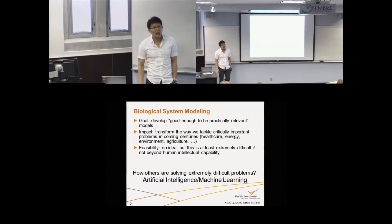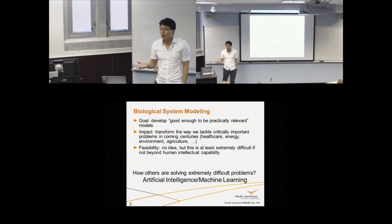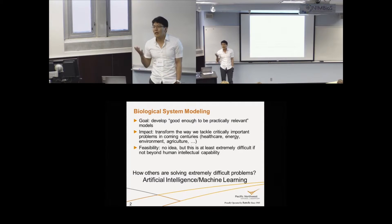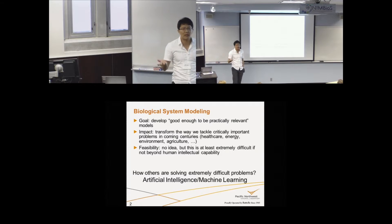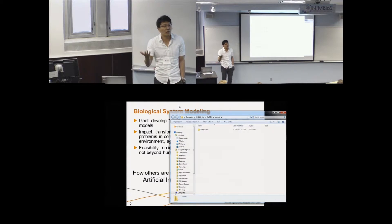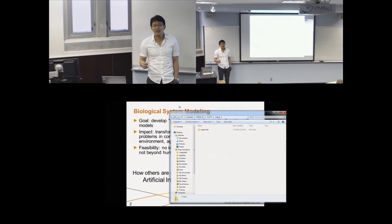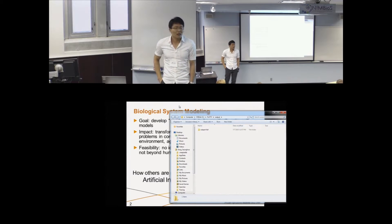If we can develop that kind of practical models, that can really transform many very different important problems in coming centuries, like healthcare, energy, environment, agriculture. What can be more important than that? But that is very important but also very difficult. And many biologists say those are impossible.